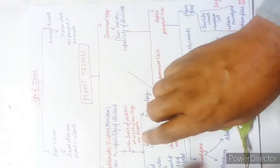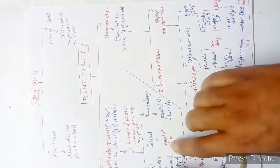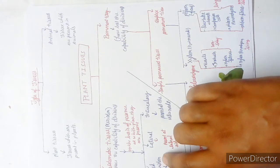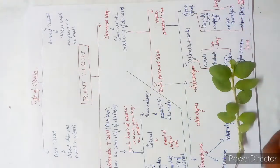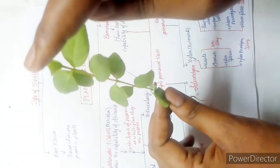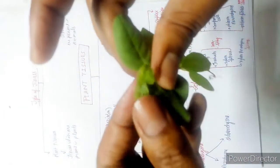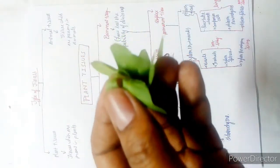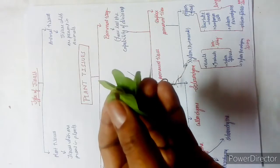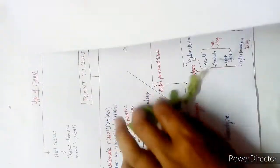The three types of meristematic tissue: first is apical meristam — present at the apex, meaning the tip of the shoot and the tip of the root. Second is lateral meristam — present at the lateral, or side, portions of the plant.